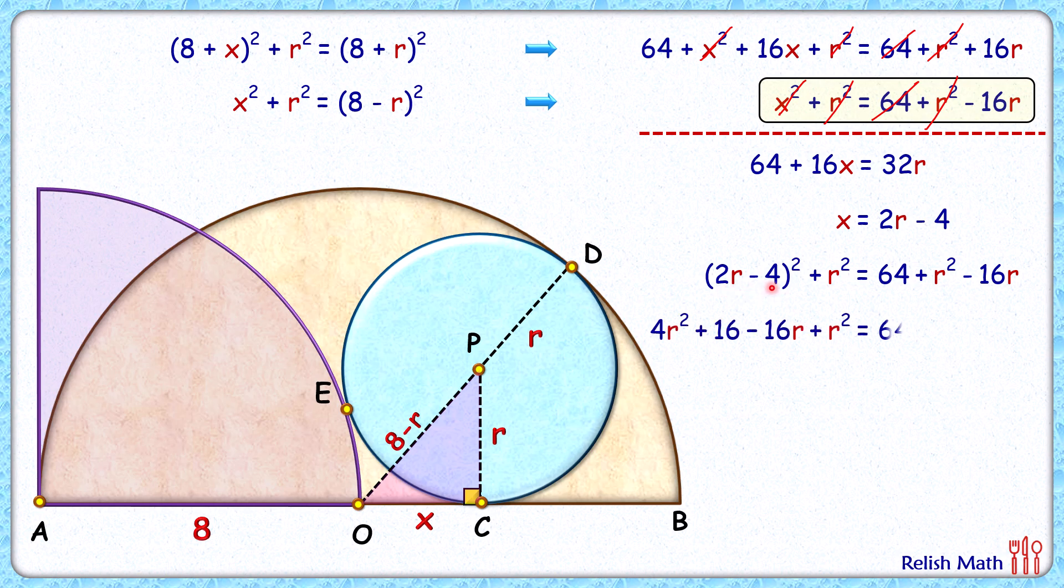Simplifying it, minus negative 16r is getting cancelled, r² is also getting cancelled. So we are getting here 4r² = 48, r² = 12, and r, the radius of this blue circle, is 2√3 centimeters. And that's our answer.